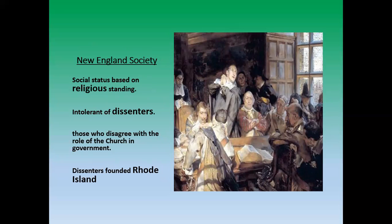Society in New England was primarily based on religious practices. They were intolerant of dissenters — people who went against the religious teachings of the Puritans. Anybody who disagreed with the role of the church in government was a dissenter, and they would be severely punished. But a big enough group of them would break off and actually found the colony of Rhode Island, also known as the tiniest state in the United States.